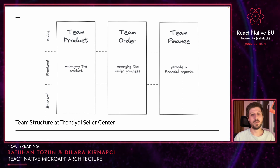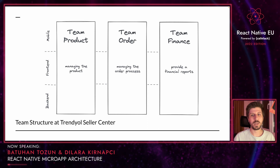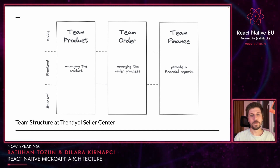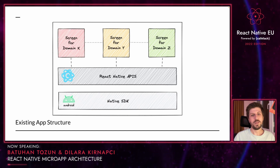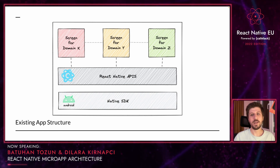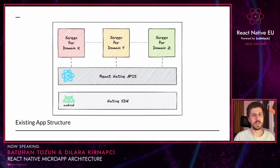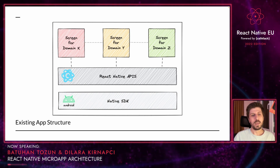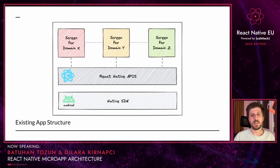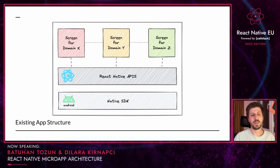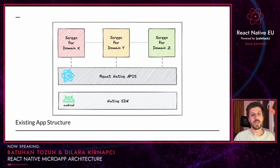For example, the product tribe is just focused on managing products and the finance team just provides financial reports. Let's take a look at our simple and monolithic React Native structure. At the top level, we have our application business logic like UI components and some APIs written in JavaScript. At the mid-level, we have the React Native framework as a bridge to the native SDK. If you want to use any additional functionality missing in React Native, like camera bridge or similar, you should implement that missing functionality or add an external library.